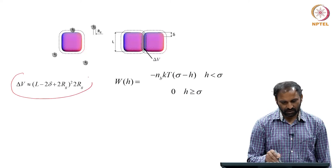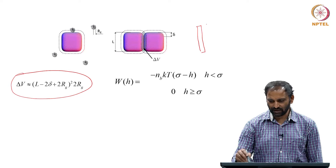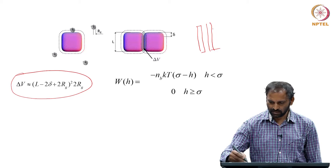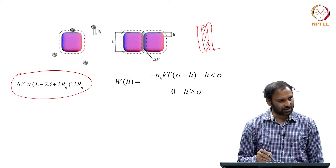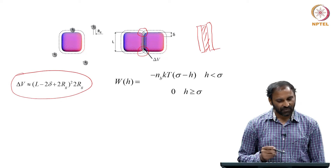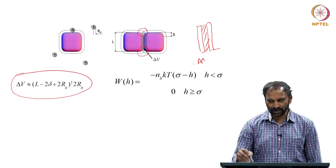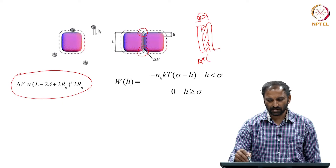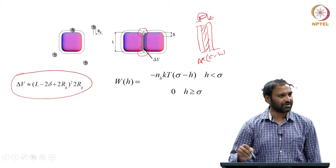The depletion volume expression was given. If we look at what was derived in class for two flat plates, the region between the plates is the depletion volume. In that case, the depletion volume is the area of the plates multiplied by the separation distance. If sigma is the size of the polymer added, then sigma minus H is the depletion volume, where H is the separation distance.